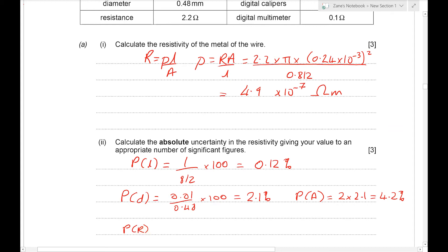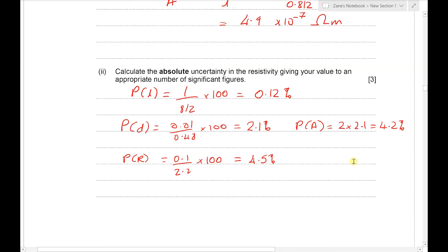Next the percentage uncertainty in the resistance. Same sort of calculation, 0.1 over 2.2 times by 100 giving us 4.5%.